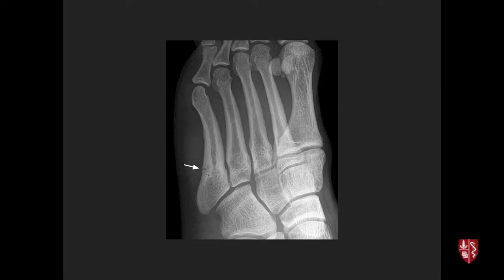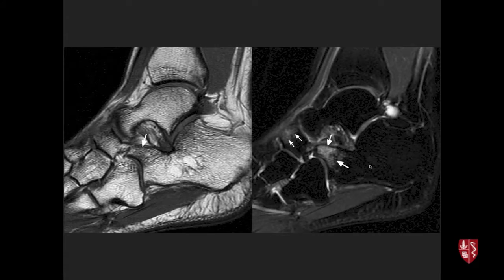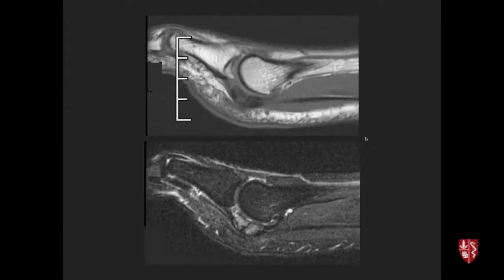Fifth metatarsal stress fractures are a higher-risk injury: progression to a complete fracture may require orthopedic fixation, often with a screw placed along the shaft. Anterior process of the calcaneus is another stress injury site, showing low T1 and high T2 signal representing a stress reaction without a discrete fracture line.